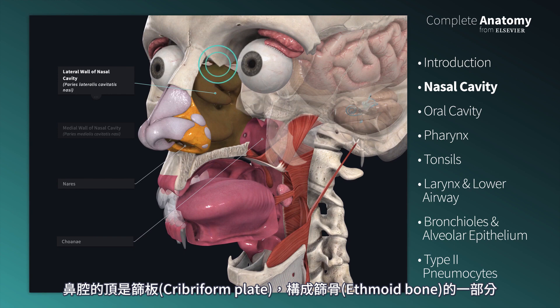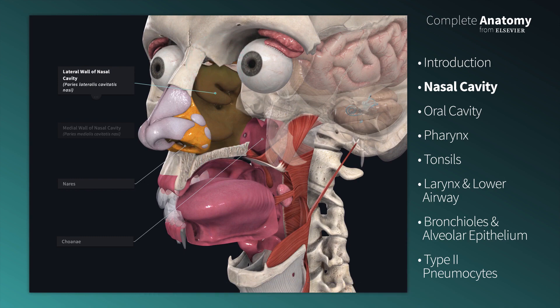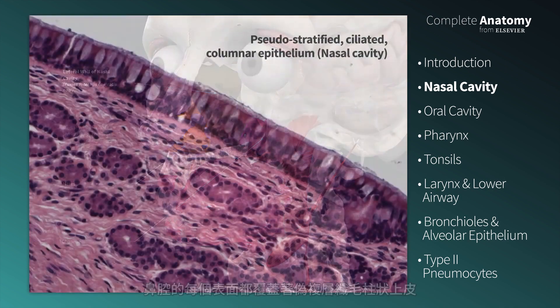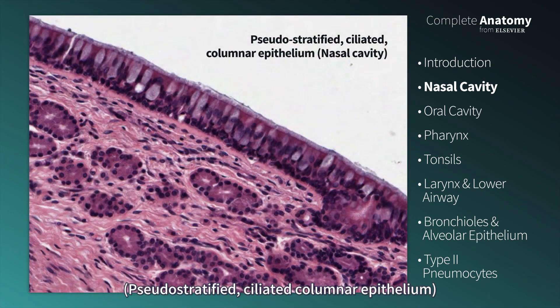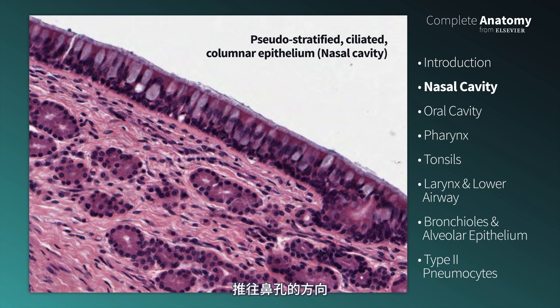The ceiling is the cribriform plate of the ethmoid bone, and the floor is the hard palate of the maxillary bone. Each surface of the nasal cavity is lined by a pseudostratified ciliated columnar epithelium. The cilia sweep particulate matter trapped in the thick, watery mucosal secretions toward the nares.